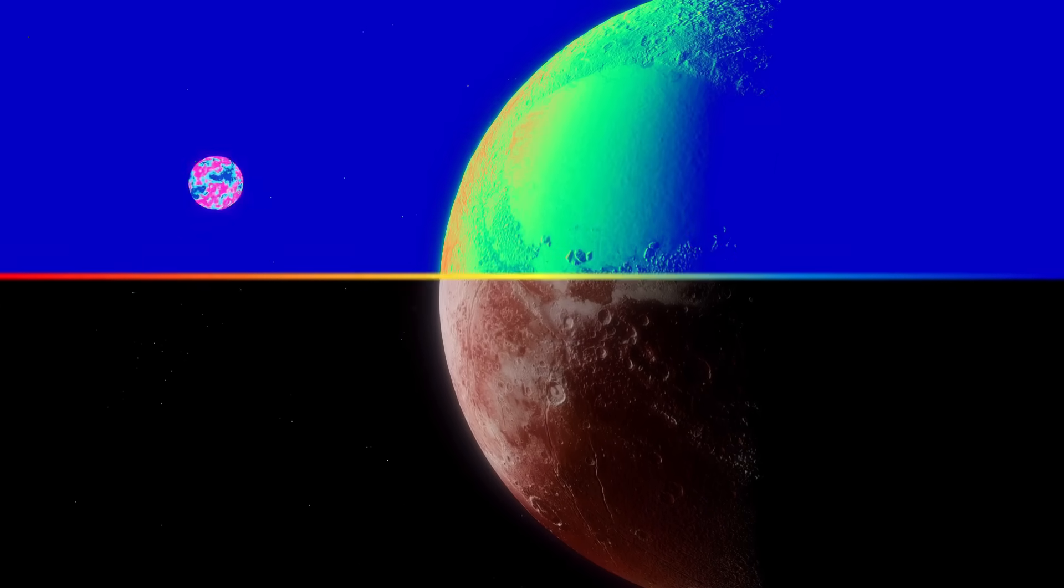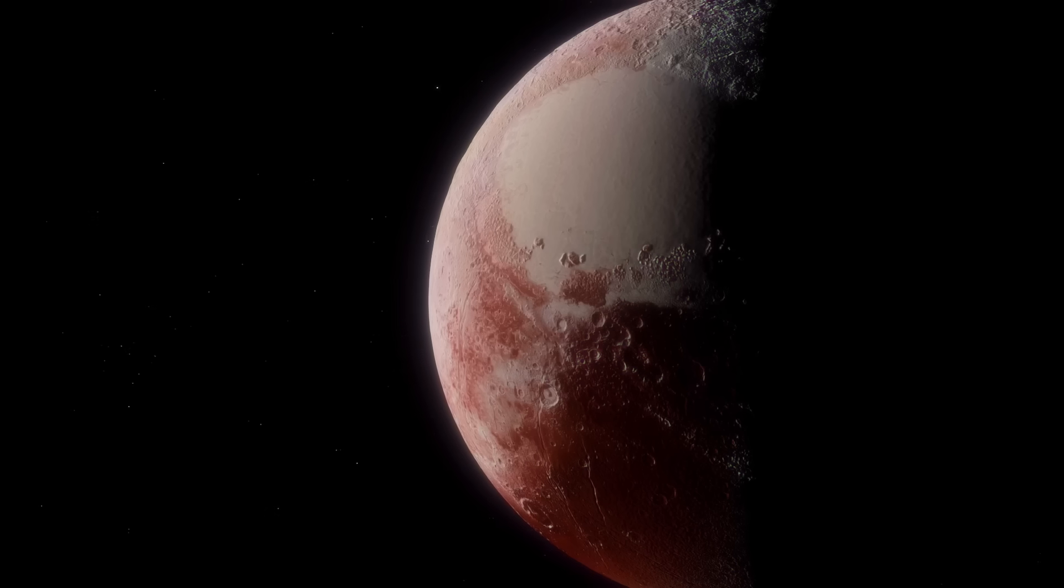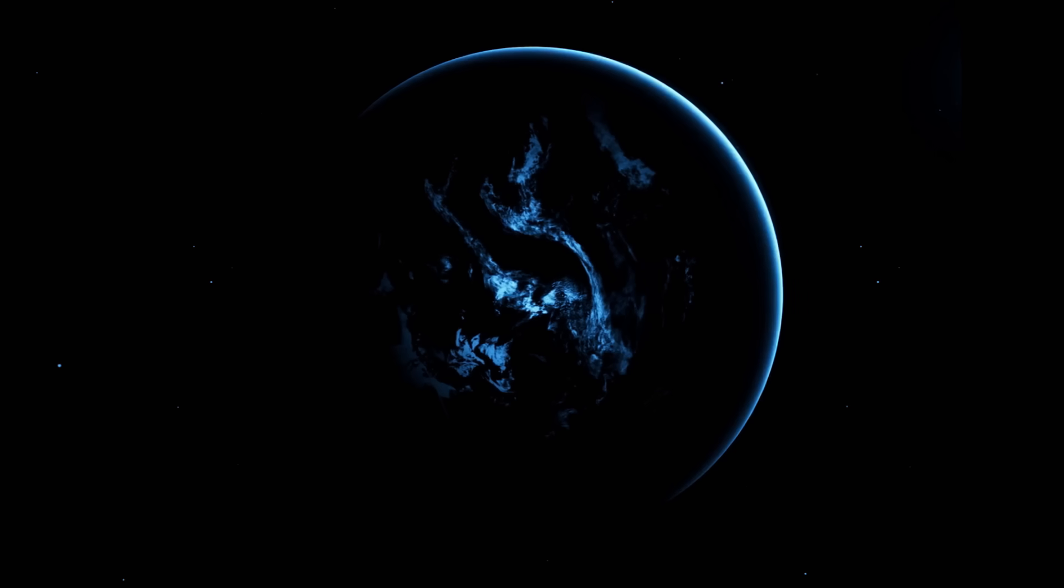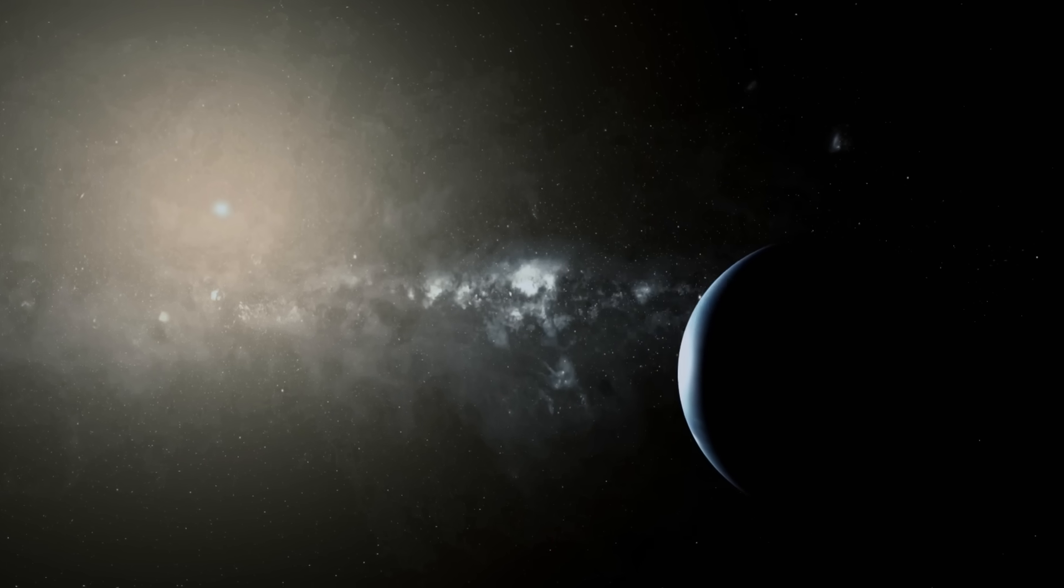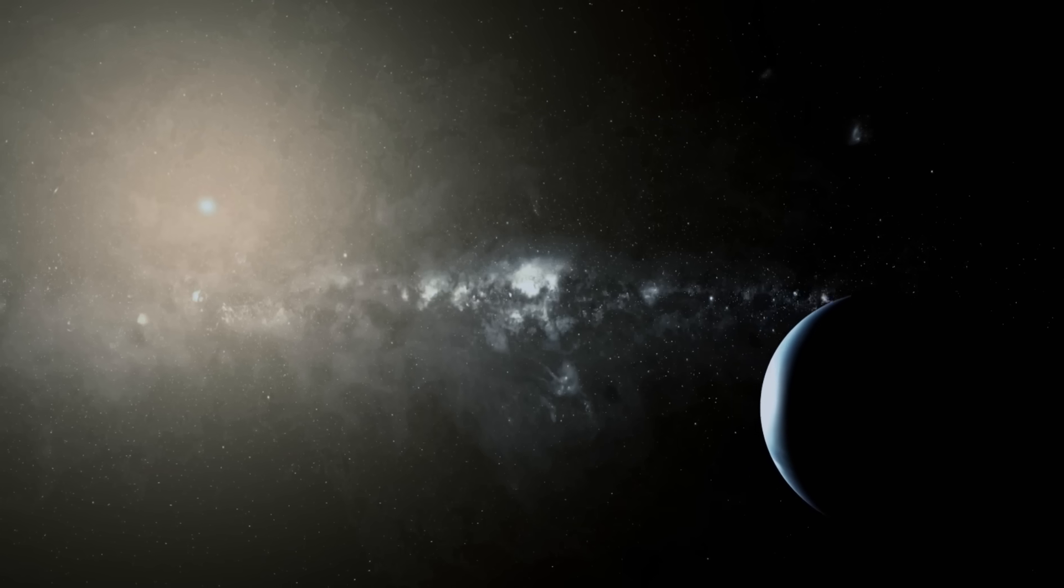So far, in fact, that we might never see it with visible light. They called it Planet Nine. And ever since, astronomers have been on its trail, chasing shadows at the edge of the solar system.